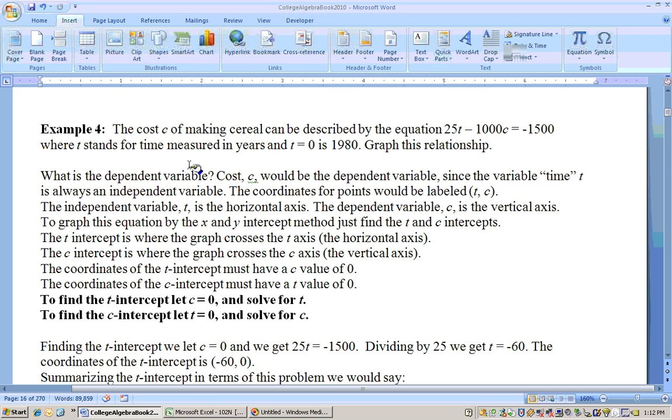On this example, it says the cost C of making cereal can be described by the equation 25T minus 1000C equals negative 1500, where T stands for time measured in years, and T equals zero is the year 1980, and C stands for the cost of making the cereal, and it wants you to graph this relationship.